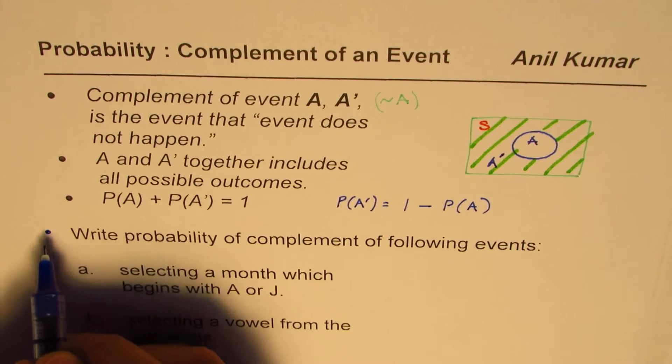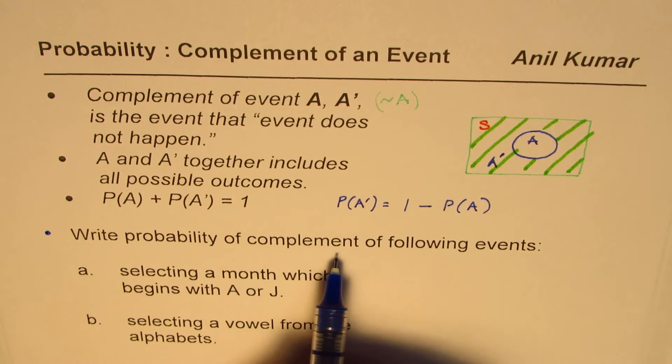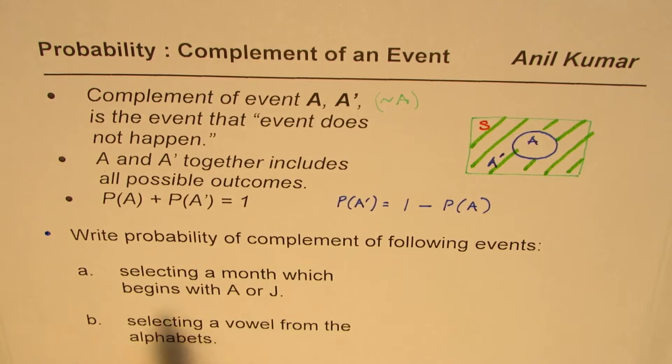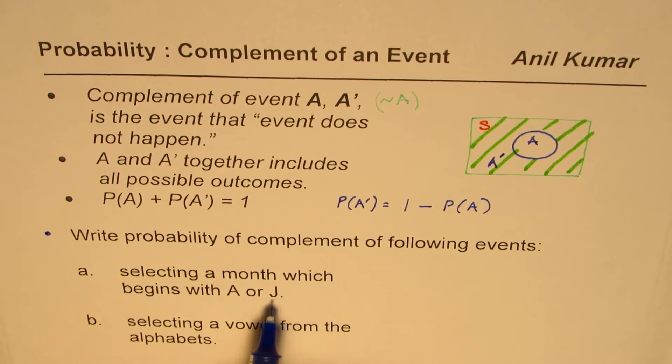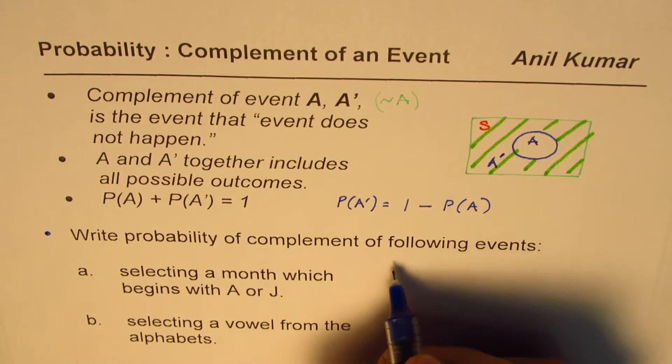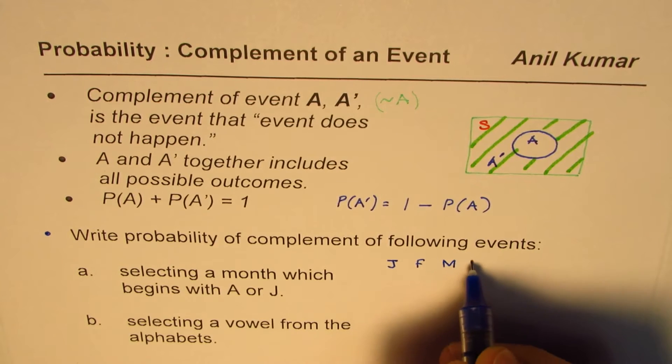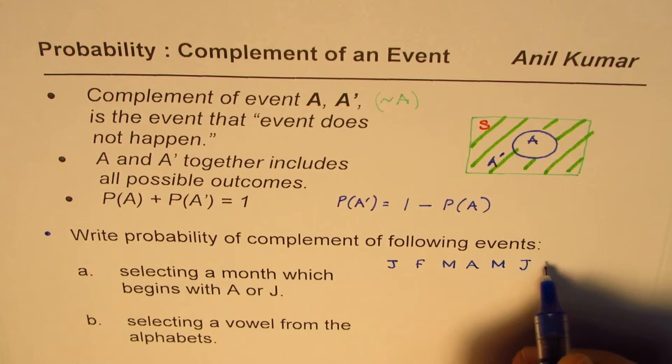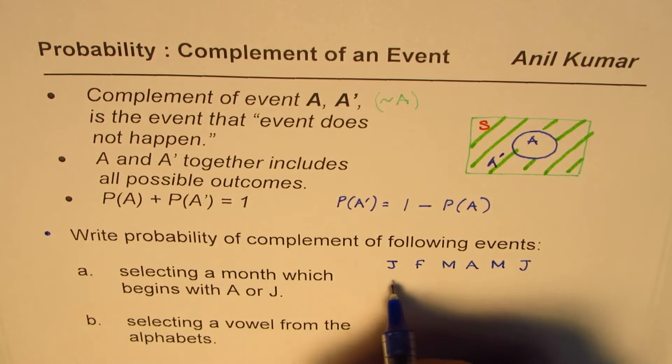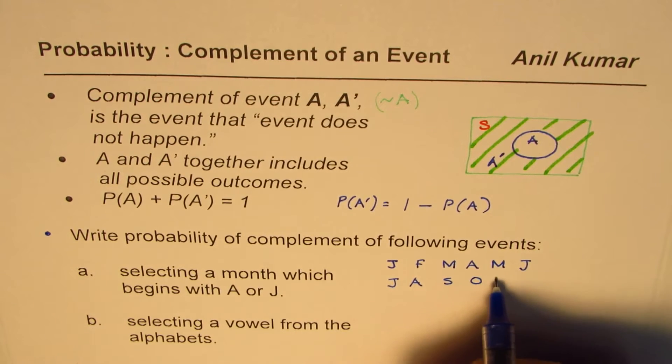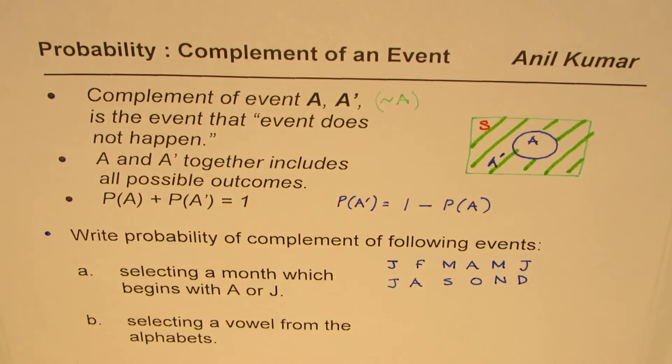So the question here for your reference is write probability of complement of following events. So we are selecting two events: selecting a month which begins with A or J. So let's look into the months. We have January, February, March, April, May, June, July, August, September, October, November and December. So we have 12 months in all.